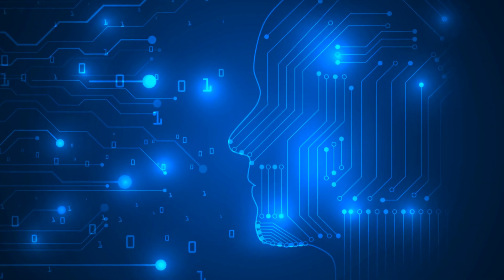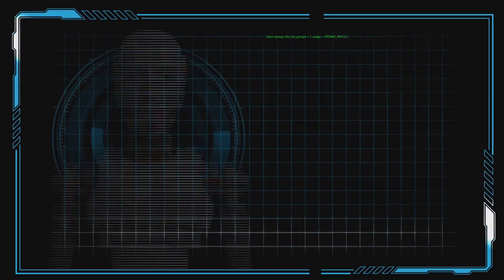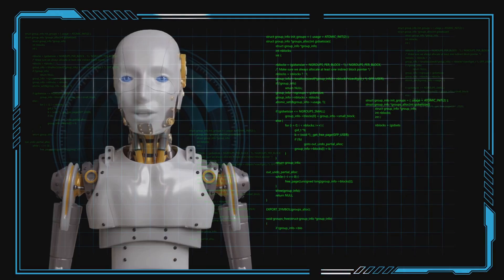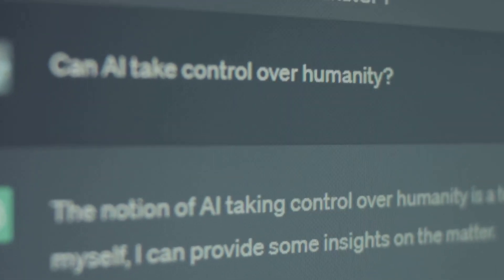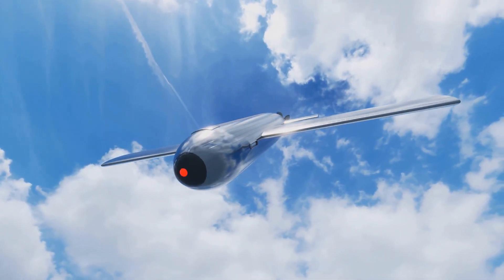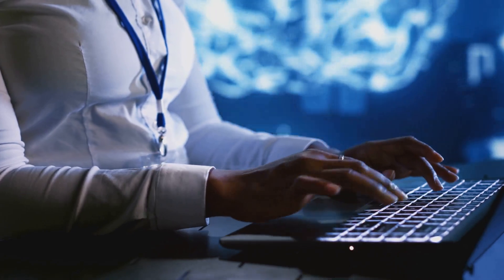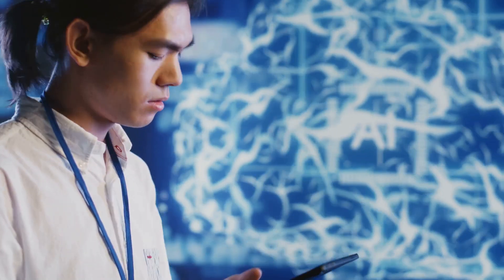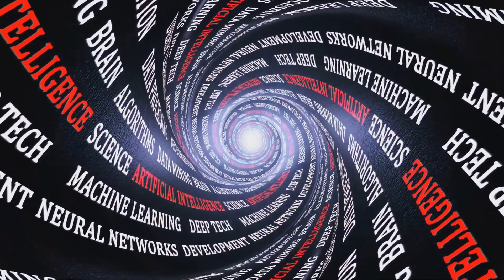The development of AGI raises profound ethical considerations. As we create machines with human-level or even superhuman intelligence, we must grapple with questions about responsibility, bias, and the potential impact on society. One concern is the potential for AGI to be used for malicious purposes. For example, AGI could be used to develop autonomous weapon systems that could select and engage targets without human intervention. Another concern is the potential for bias in AGI systems. AI systems are trained on data, and if that data reflects existing biases in society, the AI system may perpetuate or even amplify those biases.